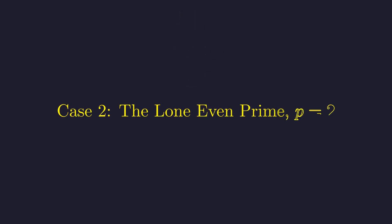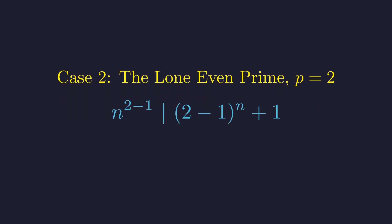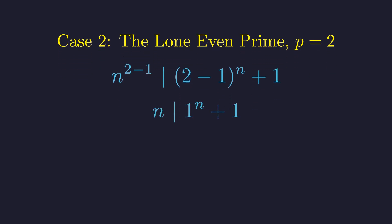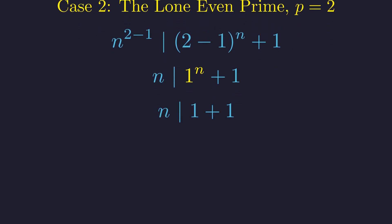The prime 2 is unique, so it often requires separate analysis. Let's examine the case where p equals 2. The expression becomes n^(2-1) must divide (2-1)^n + 1. This simplifies to n must divide 1^n + 1. Since n is a positive integer, 1^n is 1.